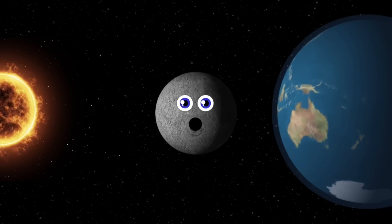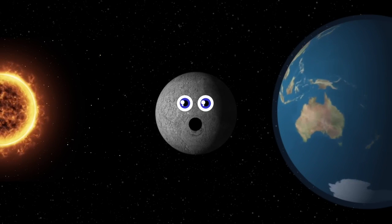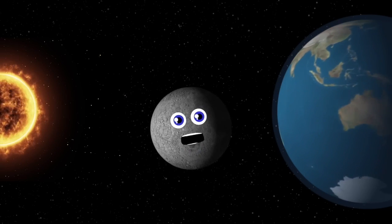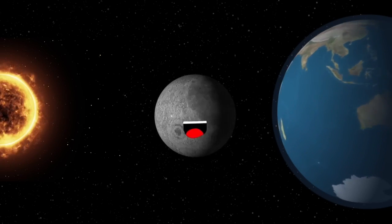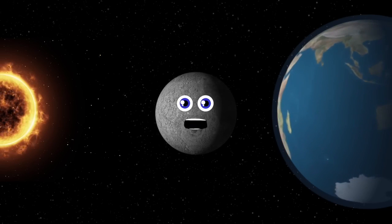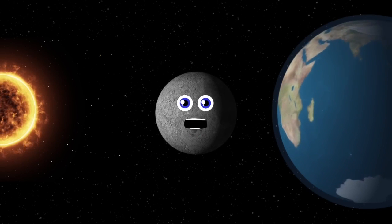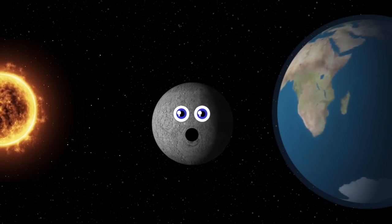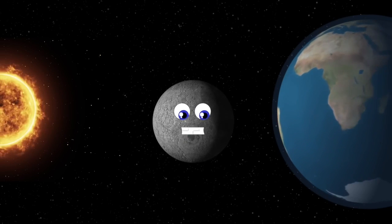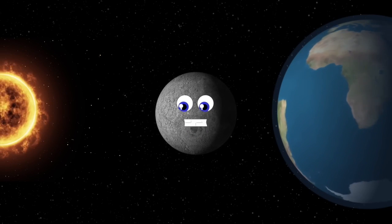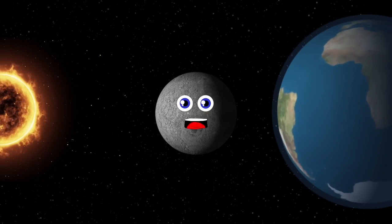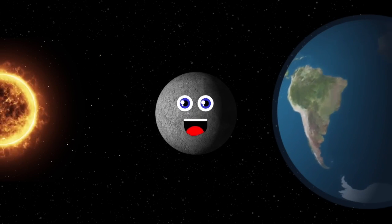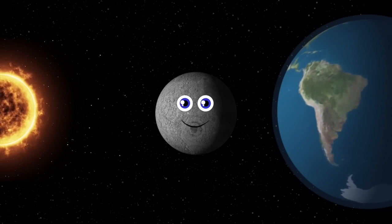I'm the moon, Earth's natural satellite. I rotate at the same speed as the Earth and I'm a natural source of light. My appearance is gray and white — you only see one half of my surface, whether it's day or night.